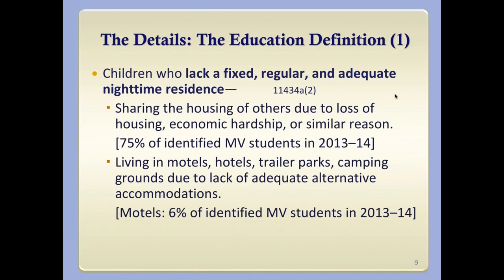The next category in the statute: living in motels, hotels, trailer parks, or camping grounds due to lack of adequate alternative accommodations. That last phrase is the pivotal one — if you're on vacation staying at the Hyatt, you have adequate alternative accommodations and wouldn't be considered homeless. For motels, that was 6% of students identified as McKinney-Vento by schools in the 2013–2014 school year, and it's one of the categories that has seen the most growth over the past three or four years.